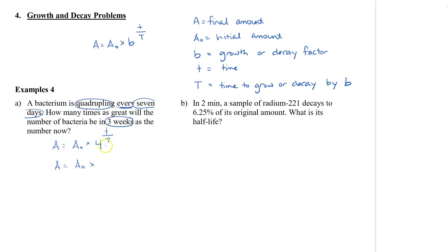Because the unit of measurement in the denominator of the exponent is days, we also need to change the three weeks to days as well. So this will be 21 divided by seven. So we have A is equal to A naught times four cubed, which is then 64.